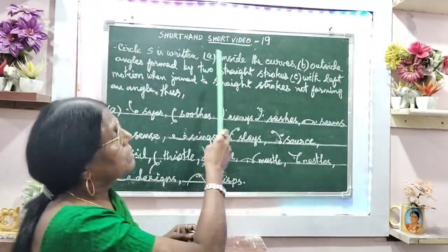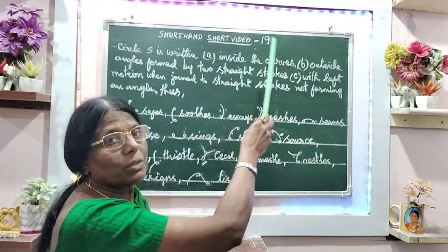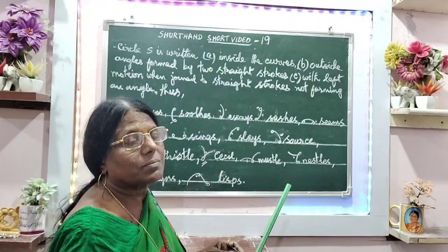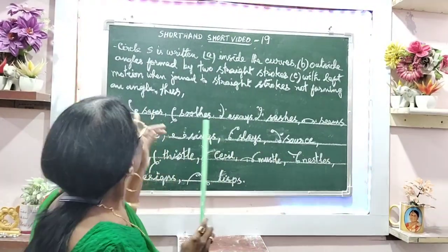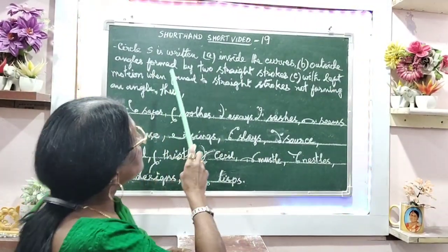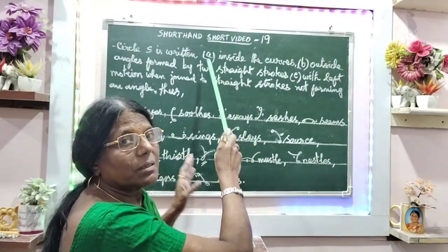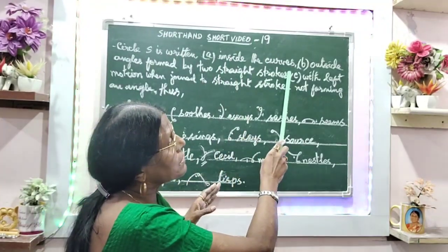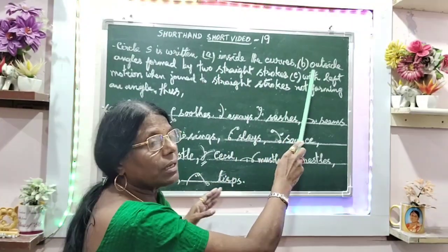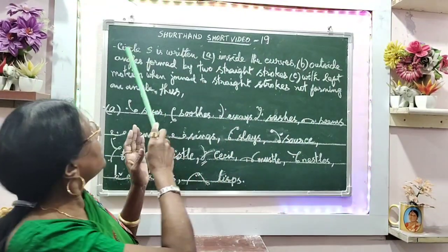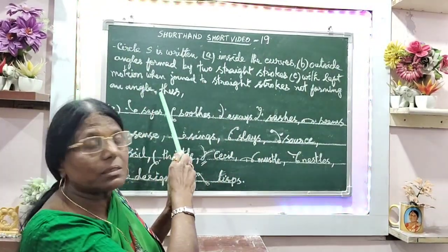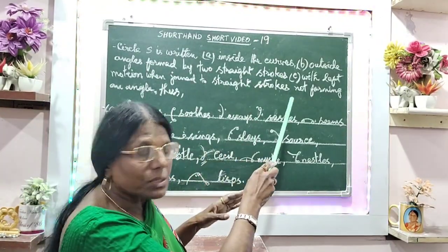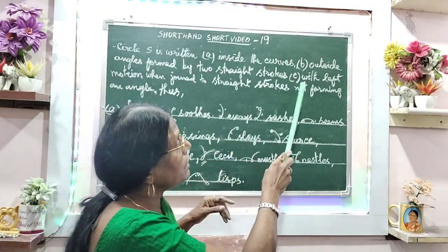Short video number 19. Circle S is written A, inside the curves B, outside angle formed by two straight strokes, and C.